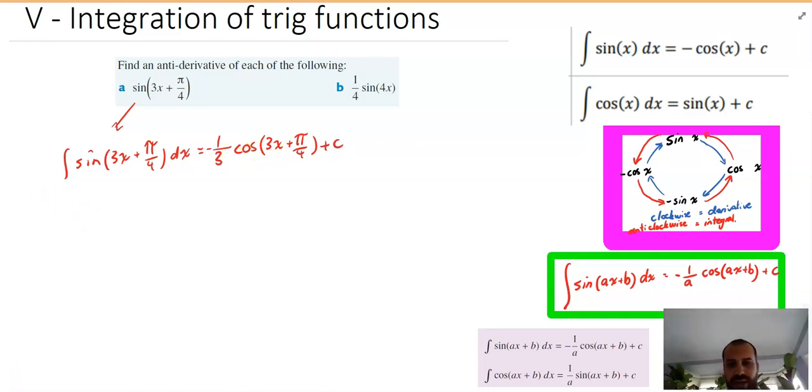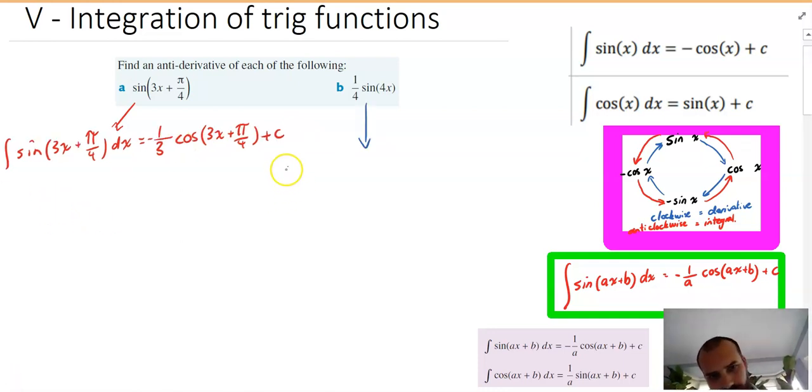This one, the integral of one quarter sine 4x. Now that's again going to be, that four is our a value so it's going to be equal to, with respect to x of course, it's going to be equal to one quarter and then that four is also going to be down there so one quarter times four on the bottom.